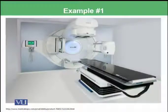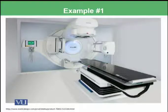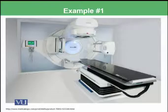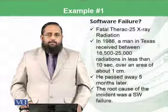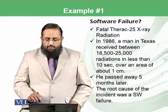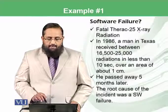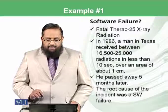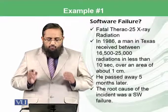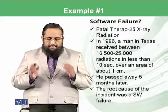For example, this is a radiation machine, and such machines are normally used for cancer patients. There was a patient who came for radiation treatment and the software controlling this machine gave an extra amount of radiation to that patient, and due to that, the patient passed away. This was the Therac-25 x-ray radiation machine, and in 1986 a man in Texas received 16,500 to 25,000 units of radiation in less than 10 seconds.